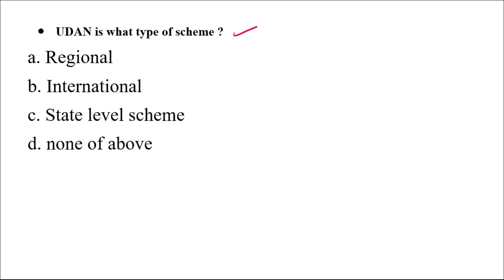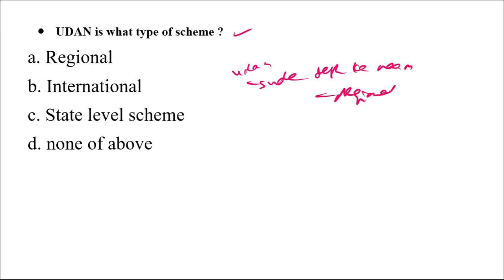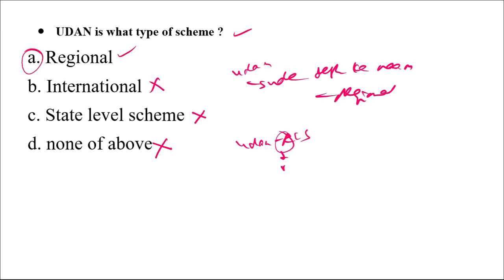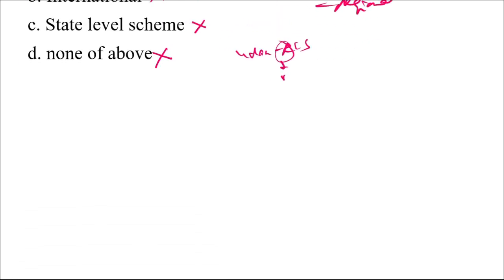UDAN — which stands for Ude Desh Ka Aam Nagrik — is a regional connectivity scheme, known as the UDAN RCS scheme, where R stands for Regional. It does not relate to international aviation. It is a central-level scheme, not a state-level scheme. The correct answer is regional scheme.